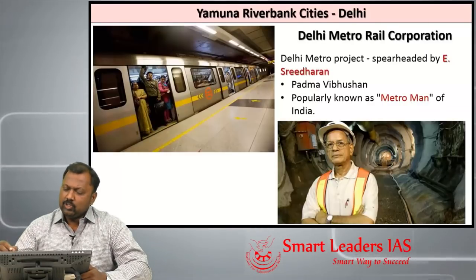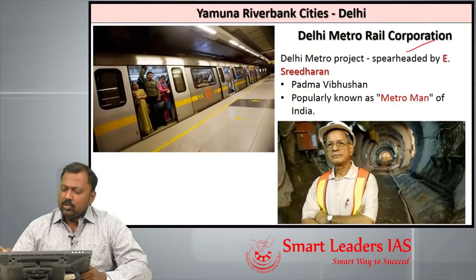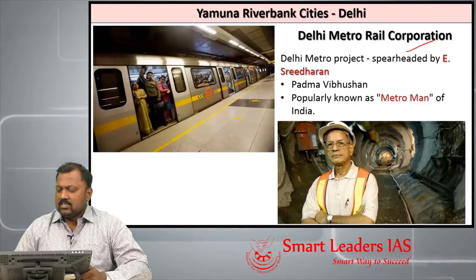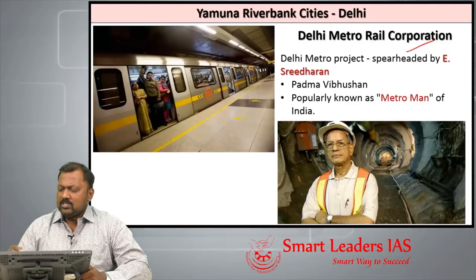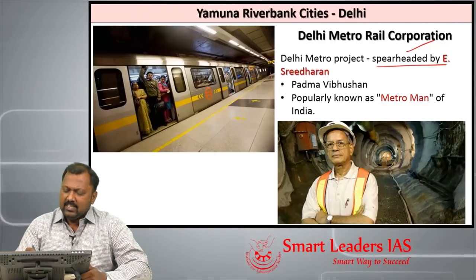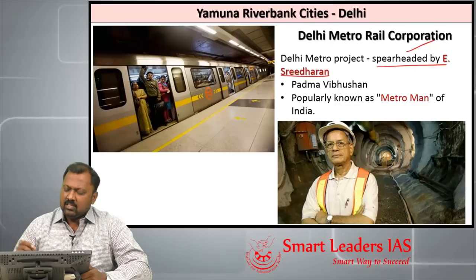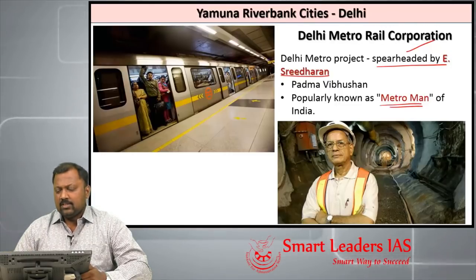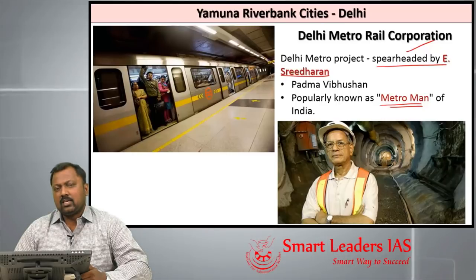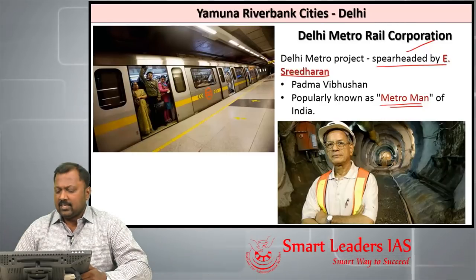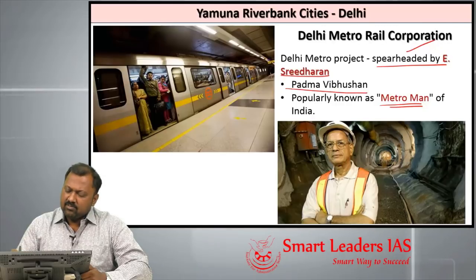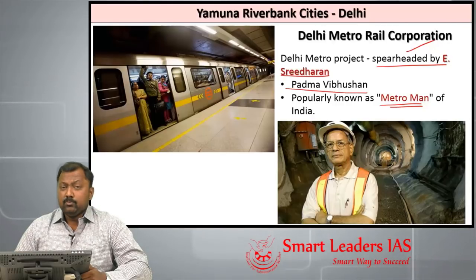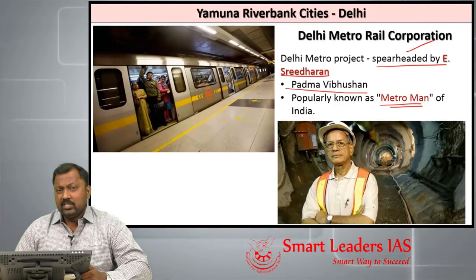Let us see some more points about Delhi. The Delhi Metro was spearheaded by E. Sridharan, referred to as the Metro Man of India, because of him the Delhi Metro was completed rapidly and on time. He is also a recipient of the Padma Vibhushan Award from the Government of India.